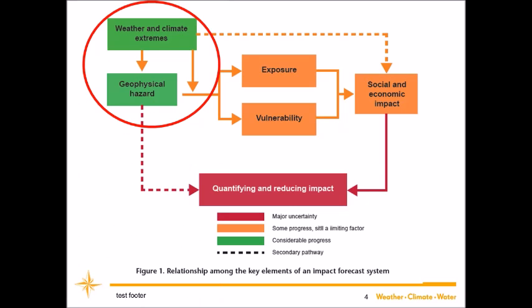The top left is the bit we traditionally work in. The solid lines represent the kind of understanding we derive from research — we've been very good at research in physical sciences and model development. We've not been as good at engaging the social sciences and understanding human behavior and how people translate our information into their decision-making. Those solid lines represent the social-science-type understanding and research that needs to be done to connect weather information with exposure and vulnerability to reach social and economic impact.